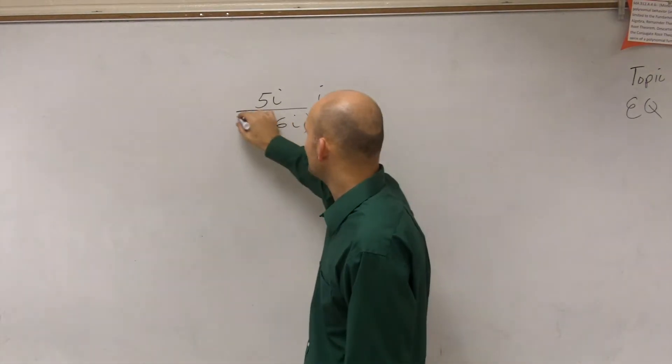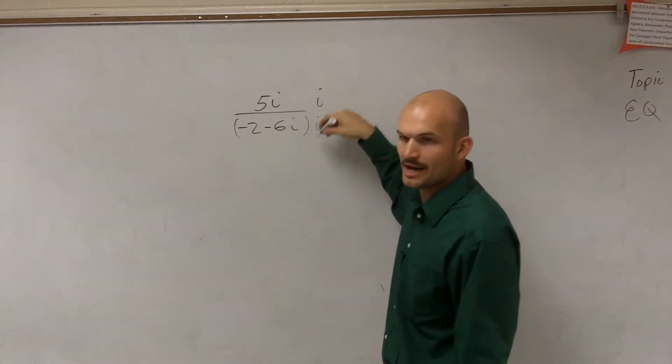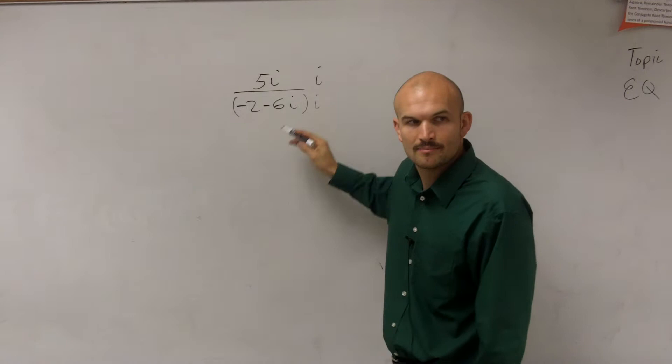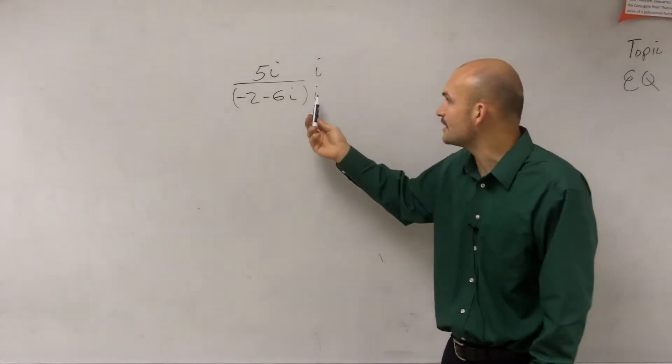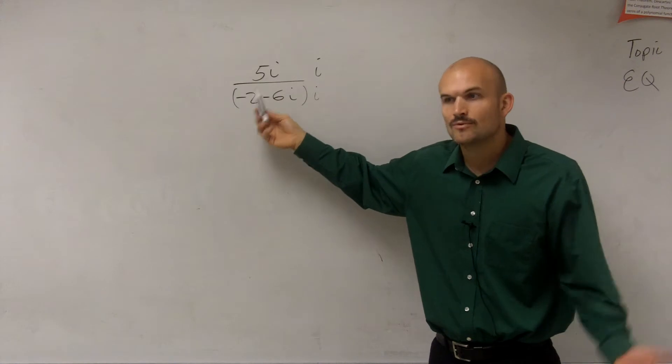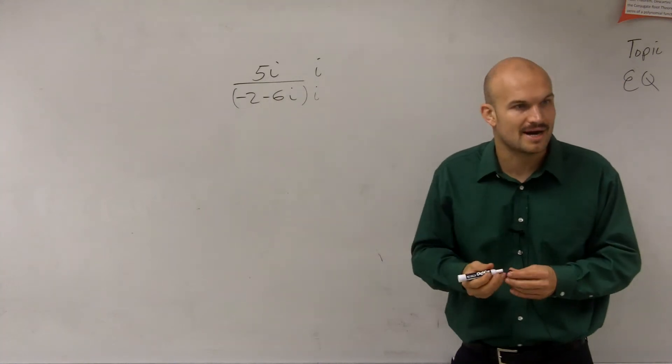But in this problem, we have a problem because I can multiply by i on the top and the bottom. But when I do i times i, I get i squared. But I have to apply the distributive property. So that means I'm going to have to multiply i times negative 2, which is still going to leave me with an i in the bottom.